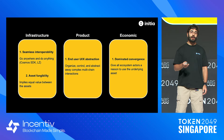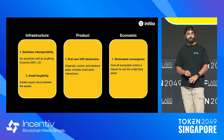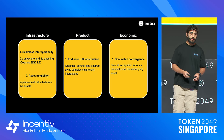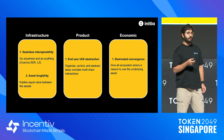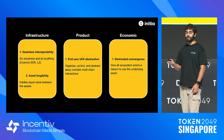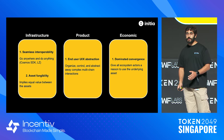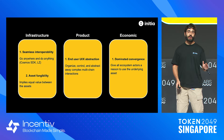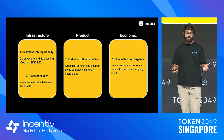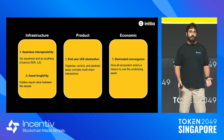Coming back to the three pillars of alignment: after infrastructure alignment where every rollup uses the same stack, we built product alignment. That means: what do end users do, what do they interact with, how do they connect wallets on every app chain, how do they bridge between app chains? Making sure the UX is the same across the board so it is a very easy experience for new developers and users.